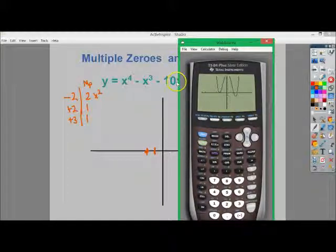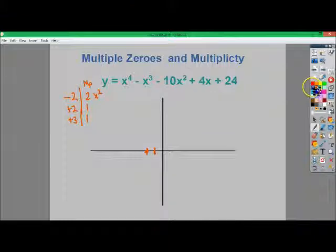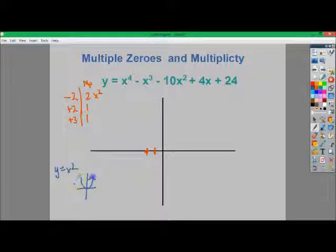So as you can see, at this 0, it kind of goes up and it bounces back. It's more like a quadratic. The general form of a quadratic, if you have like a y equals x squared thing going on, it's the same thing. It's like a mini version of that because it has a multiplicity of 2. So at that negative 2, the graph does this and then bounces back up.